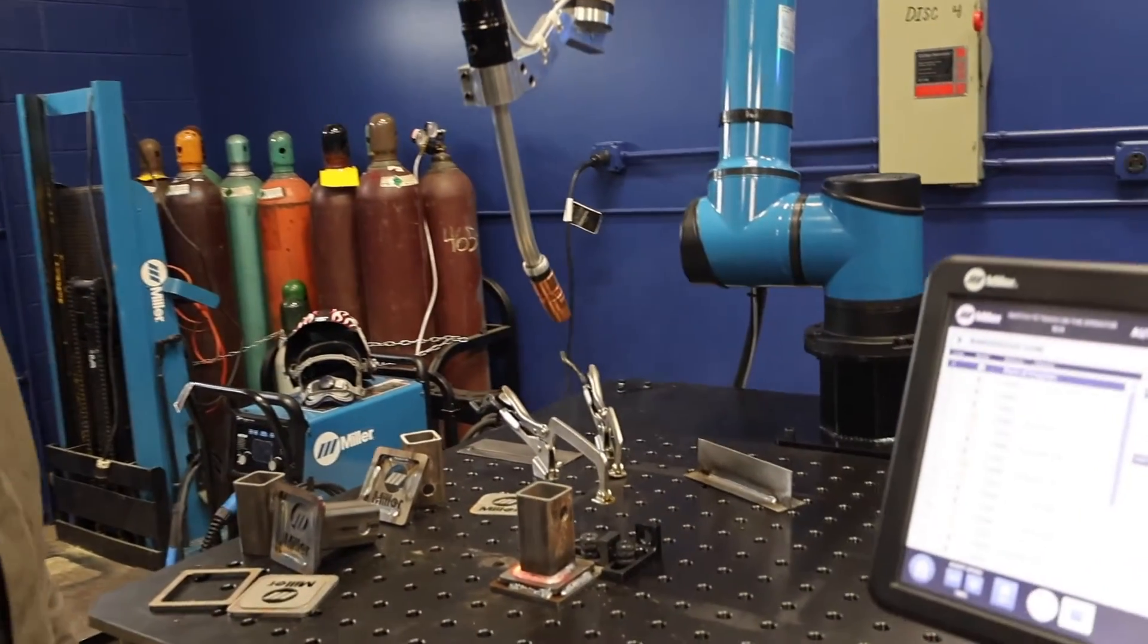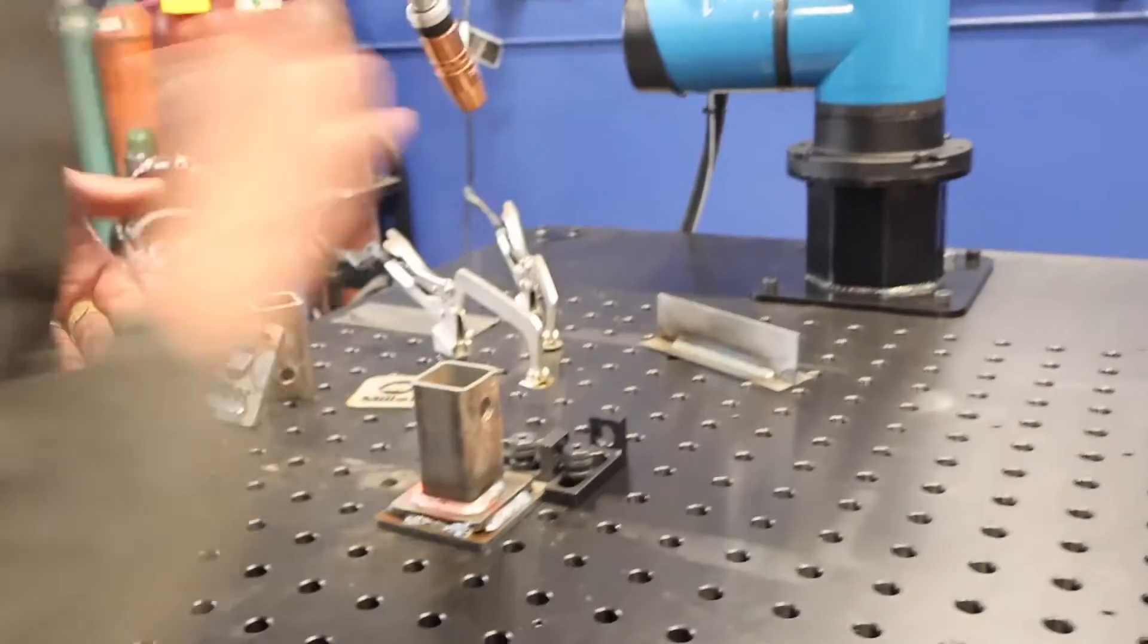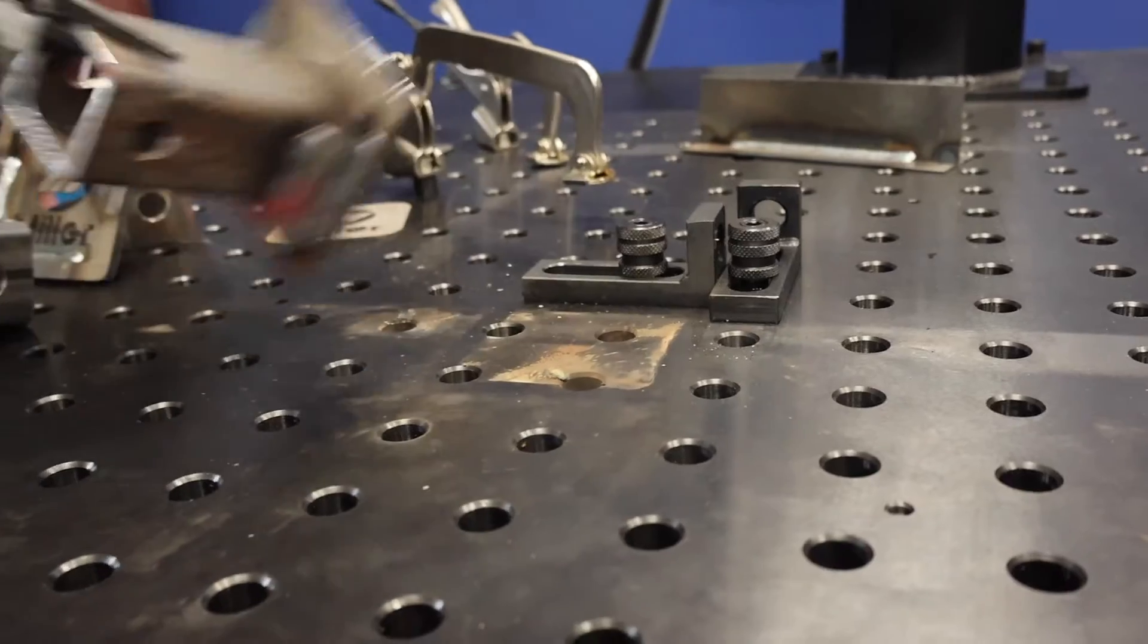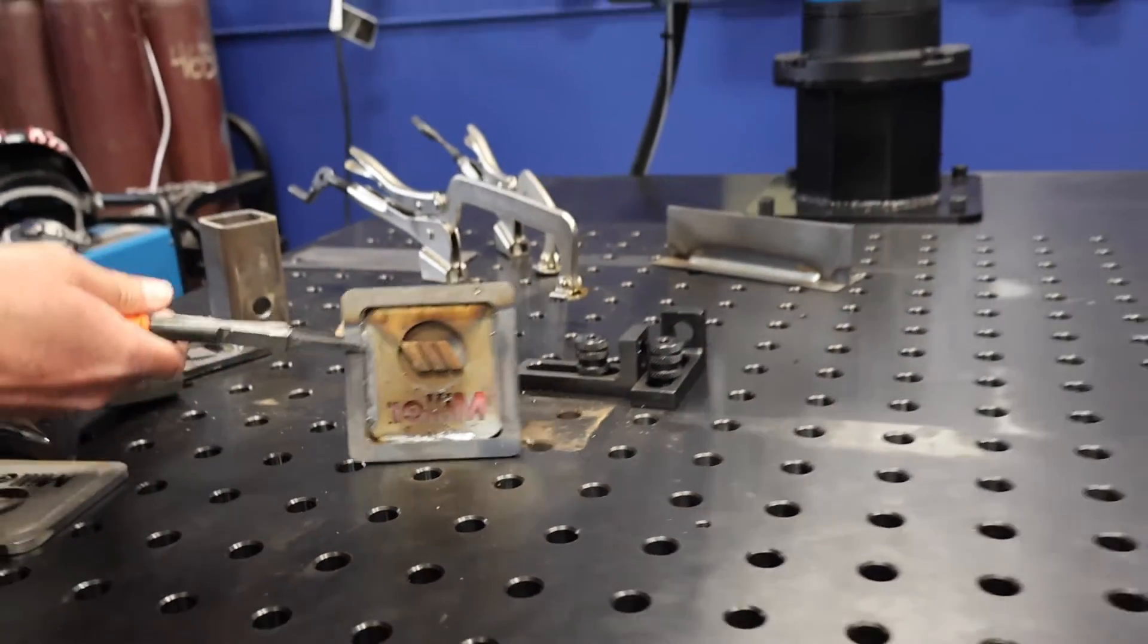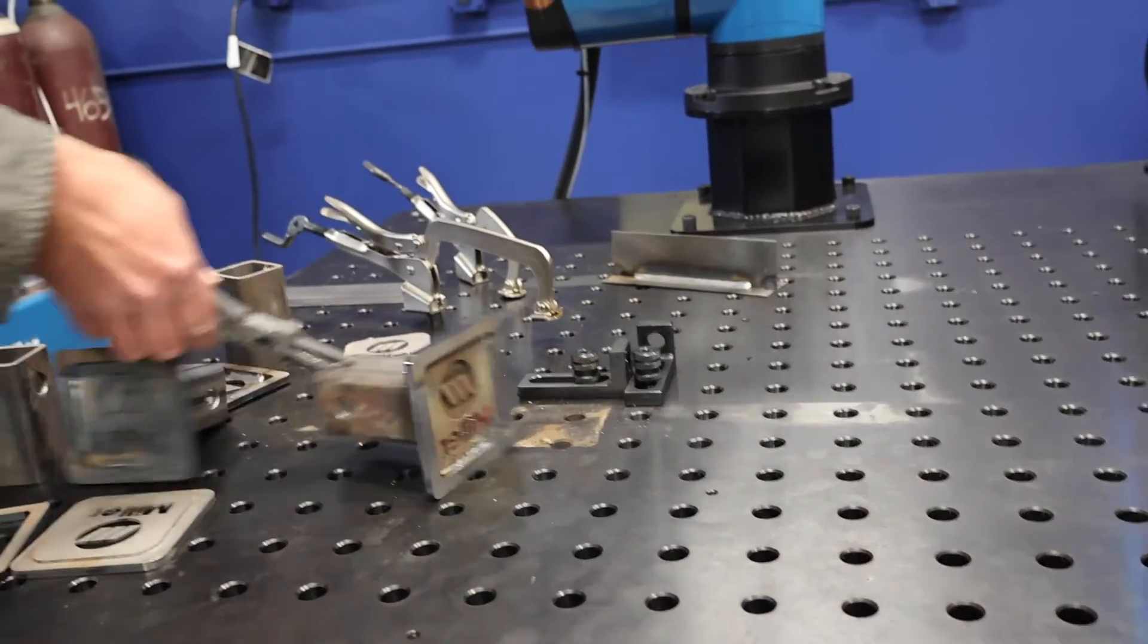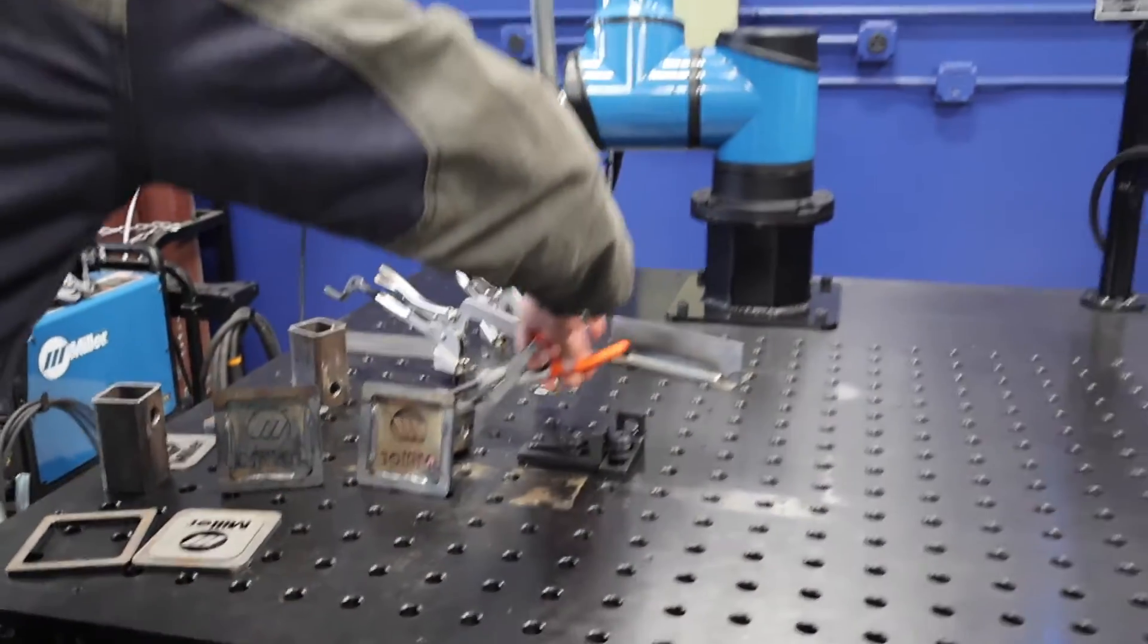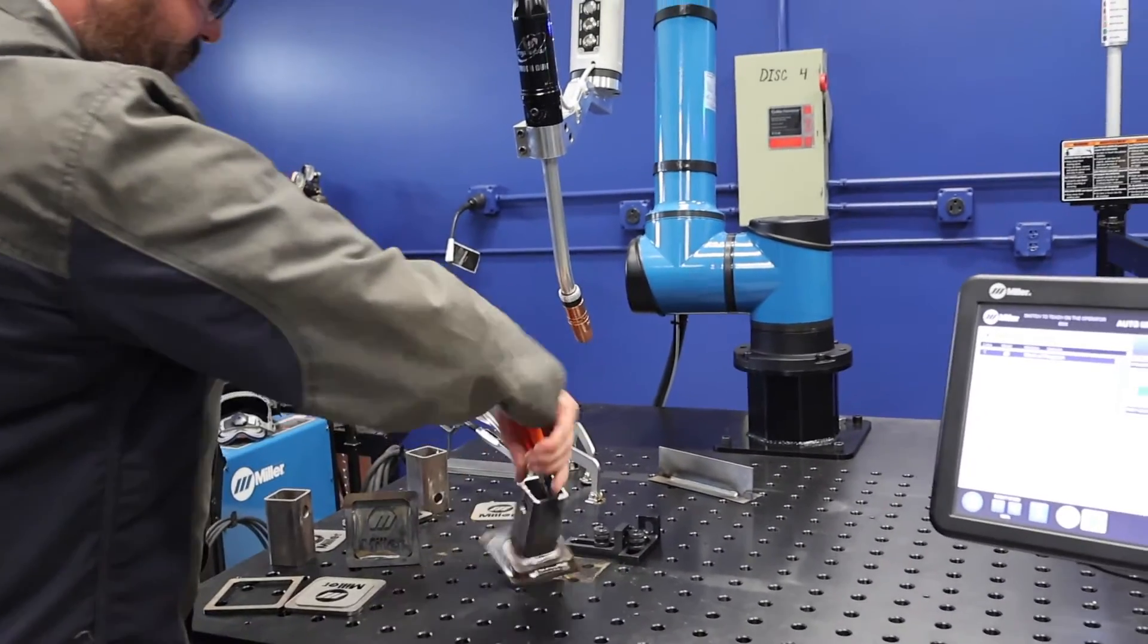Look at that, it turned out really well. I'm going to pop that out with some pliers. There it is, the Miller logo on a truck hitch. Awesome, we've got a couple of them there. The thing welds pretty darn good. The program ran pretty simple, and you can see it's laid down nicely.